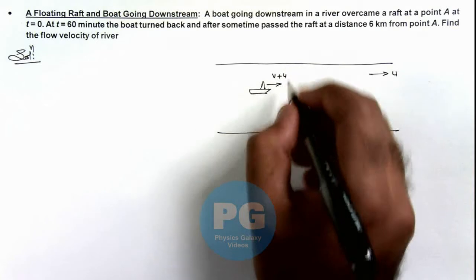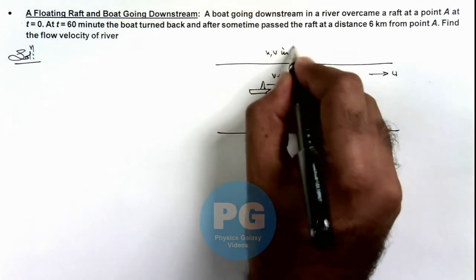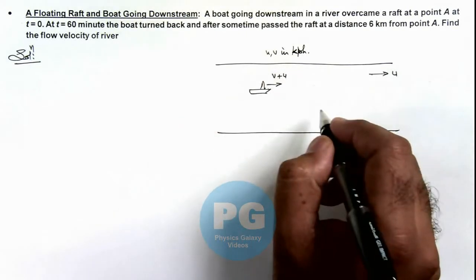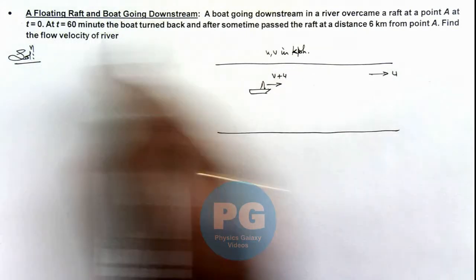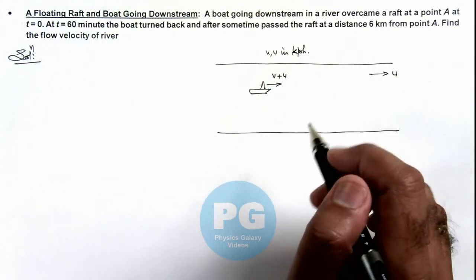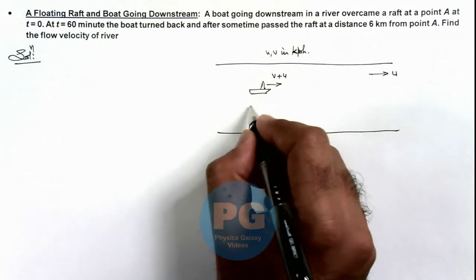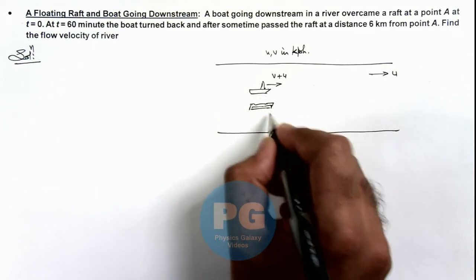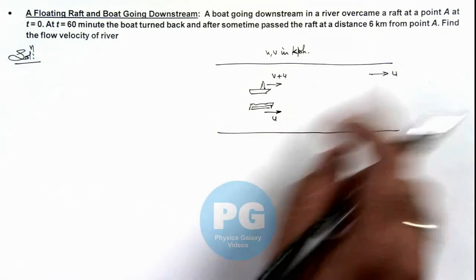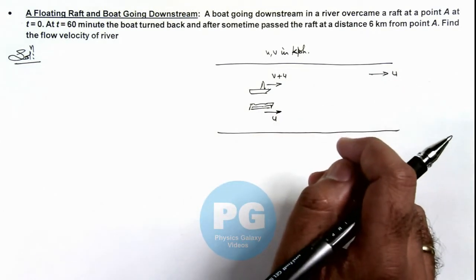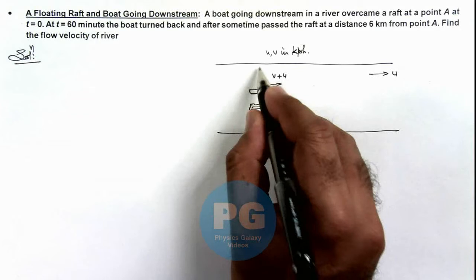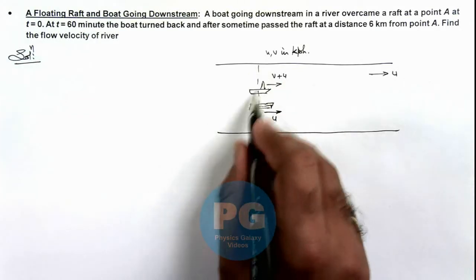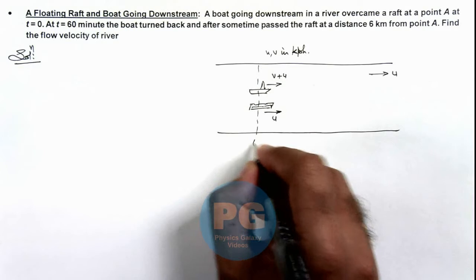We can take u and v in kilometers per hour to analyze the situation easier, because we are given time as one hour and distance is in kilometers. At t equals zero, the boat is overcoming a wooden raft which is floating. Obviously, the speed of the raft would be u only, that is the speed with which the river current is flowing. This is the location where the boat crosses or overtakes the raft at t equals zero.